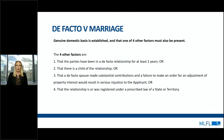To recap, in order to prove a de facto relationship, it must be shown that a genuine domestic basis is established and that one of four other factors must be present. The four other factors are that the parties have been in a de facto relationship for at least two years, or that there is a child of the relationship, or that a de facto spouse made substantial contributions and a failure to make an order for an adjustment of property interest would result in serious injustice to the applicant, or that the relationship is or was registered under a prescribed law of a state or territory.